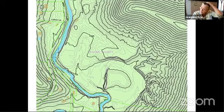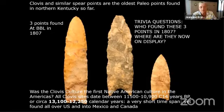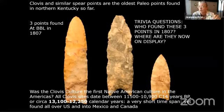I have to show you the three very famous Clovis points found at Big Bone in 1807. These should have been called Big Bone points, but they weren't named until similar points were found in Clovis, New Mexico in the early 20th century. These three were found and then kind of lost for a long time. The trivia question is: who found these three points in 1807, and where are they on display now?